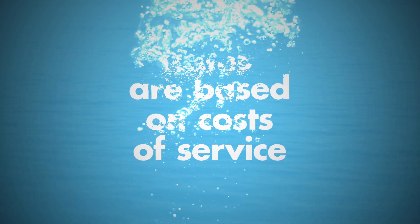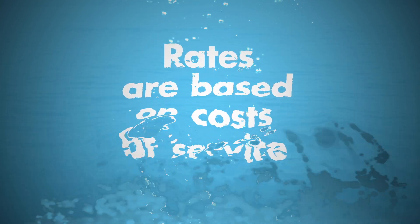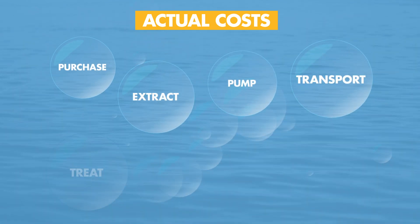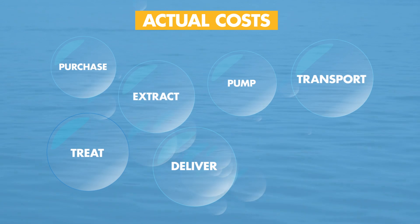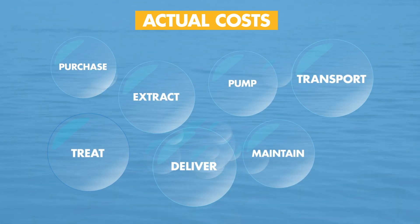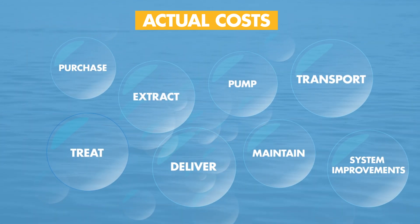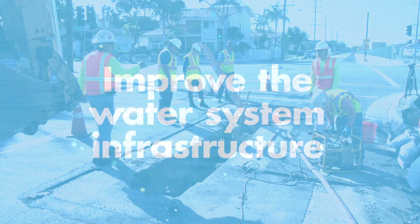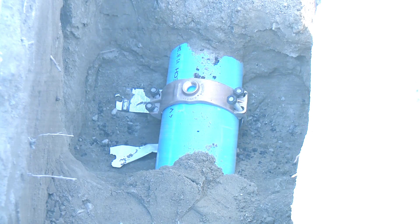Ultimately, rates for regulated water utilities are based on the cost of providing service — that is the actual cost to purchase, extract, pump, transport, and treat the water to strict standards, delivered to individual homes and businesses, and to maintain and make any needed improvements to the water system. Included in the total cost of service is the opportunity for utilities to earn a return on the funding provided by investors to improve the water system infrastructure such as pipes, wells, and reservoirs. This return is similar to paying interest on a loan, just as government water providers do when they borrow money or issue bonds to improve their systems.